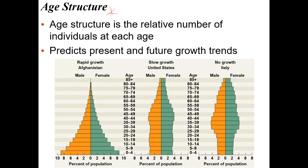Age structure is a really important thing to understand when looking at these different graphs. If we look at this first one, it shows the ages of people in cohorts — zero to four, five to nine, ten to fourteen, and so on. If you see a really big population among young people, all these people are going to grow up and have babies, so this represents a very rapidly growing population.